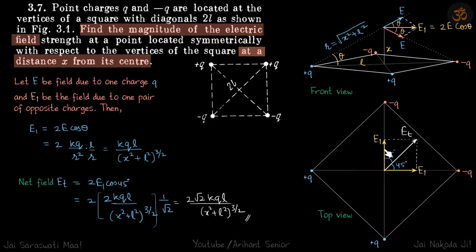This E_net and this E_net will be vector summed to give the final electric field due to all four charges. That will be E_net cos 45 plus E_net cos 45, which is 2 E_net cos 45 degrees. We'll put E_net from here and cos 45 is 1 by root 2, then simplify to get our answer.